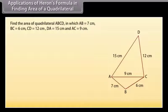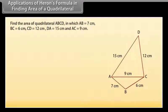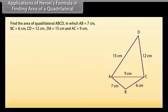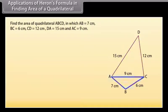Find the area of quadrilateral ABCD in which AB = 7 cm, BC = 6 cm, CD = 12 cm, DA = 15 cm, and AC = 9 cm. Look at this quadrilateral. To find its area, we divide it into two triangles. Let us now find the area of these triangles one by one.